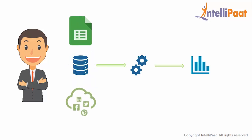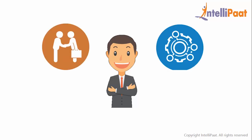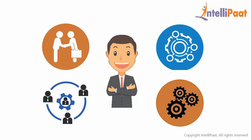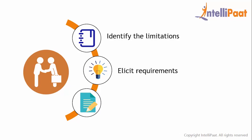Let us understand the role of a business analyst in different verticals. The common verticals are business, technical, managerial, and functional. In the business vertical, the business analyst will thoroughly understand the objectives of the business, identify limitations to develop a business case, elicit requirements through interviews and brainstorming sessions, and evaluate them for correctness. They will also document requirements using use cases, business requirement documentation, and functional requirement specification documents.